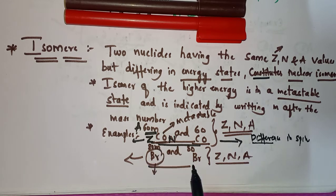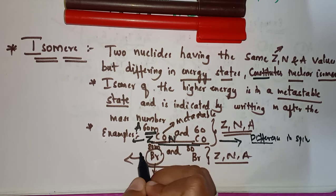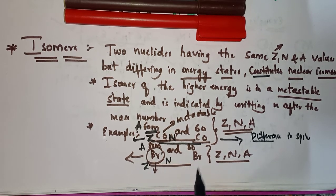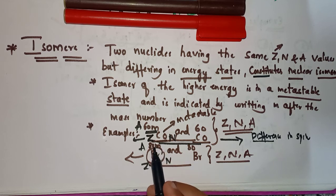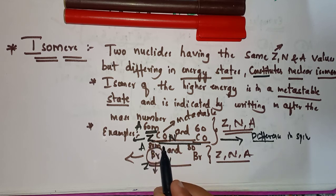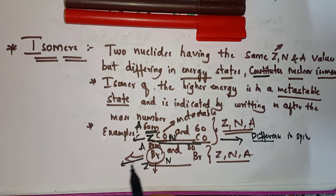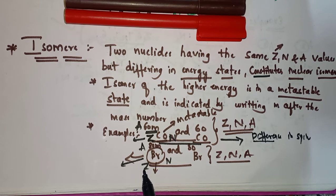Coming to the second example — bromine — it also has the same Z, A, and N values in both nuclides, but the only difference is in the energy states. They have a large difference in their spins. The nuclide in the metastable state has the higher energy state, represented by 'm' after the mass number, meaning it is radioactive. This is about nuclear isomers.